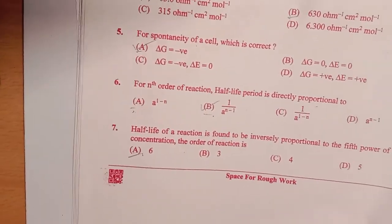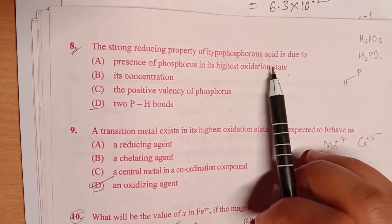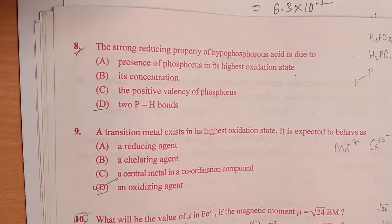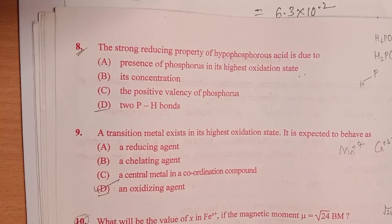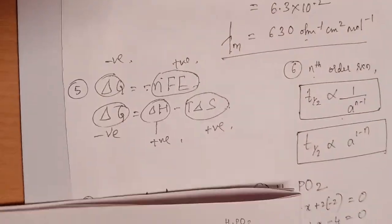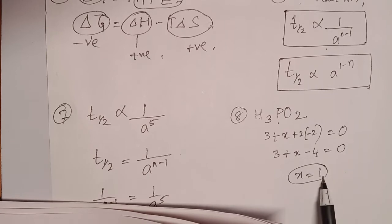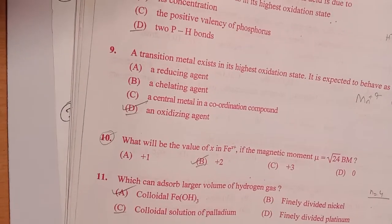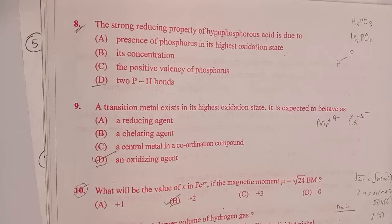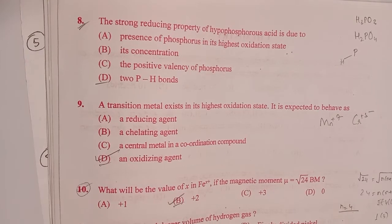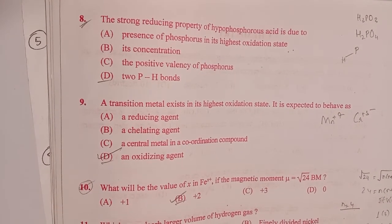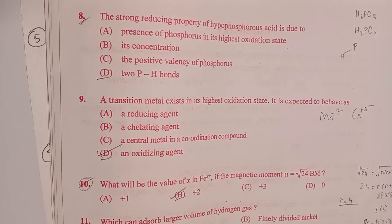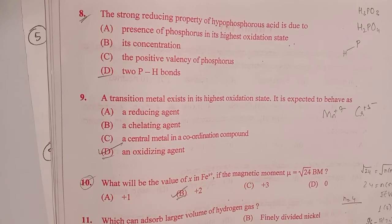Eighth question: the strong reducing property of hypophosphorous acid is due to? Option A — phosphorus in its highest oxidation state — is wrong because in H₃PO₂, phosphorus is in the plus one oxidation state, not plus five. Options B and C are also wrong. Option D — two P-H bonds — is correct. The reducing property of oxy-acids of the phosphorus family is due to the presence of P-H bonds. More P-H bonds means greater tendency to release protons.